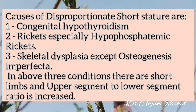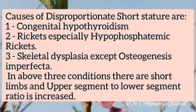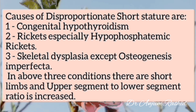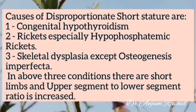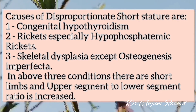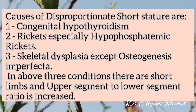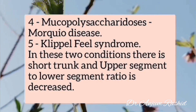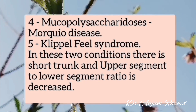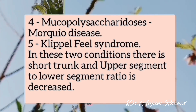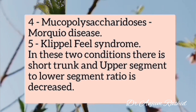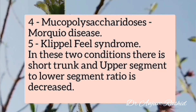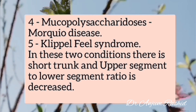The causes of disproportionate short stature: number one, congenital hypothyroidism; number two, rickets, especially hypophosphatemic rickets; number three, skeletal dysplasia except osteogenesis imperfecta. In these three conditions there are short limbs and the upper segment to lower segment ratio is increased. Number four, mucopolysaccharidosis especially Morquio disease; number five, Klippel-Feil syndrome. In these two conditions there is a short trunk and the upper segment to lower segment ratio is decreased.